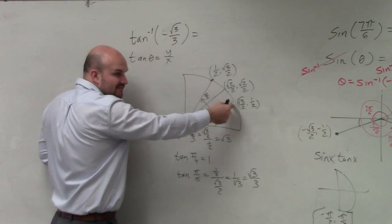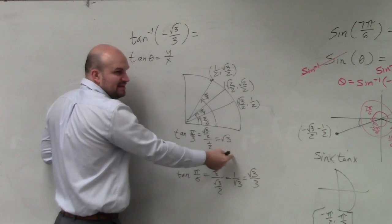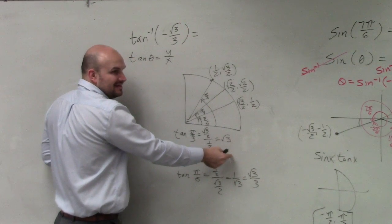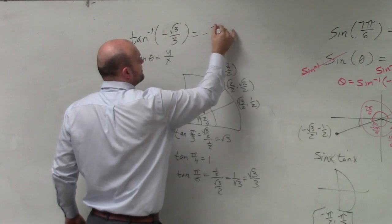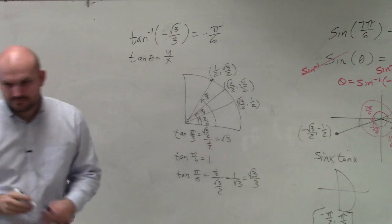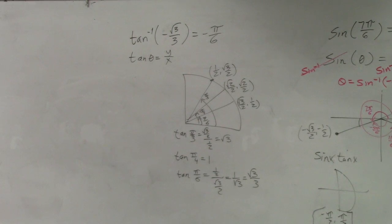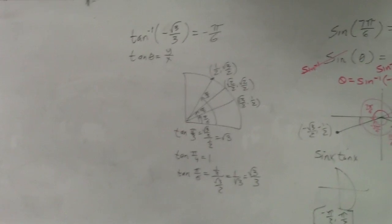So pi over 6 is in the first quadrant. So what angle would be down in the fourth quadrant? Negative pi over 6. Done. OK?